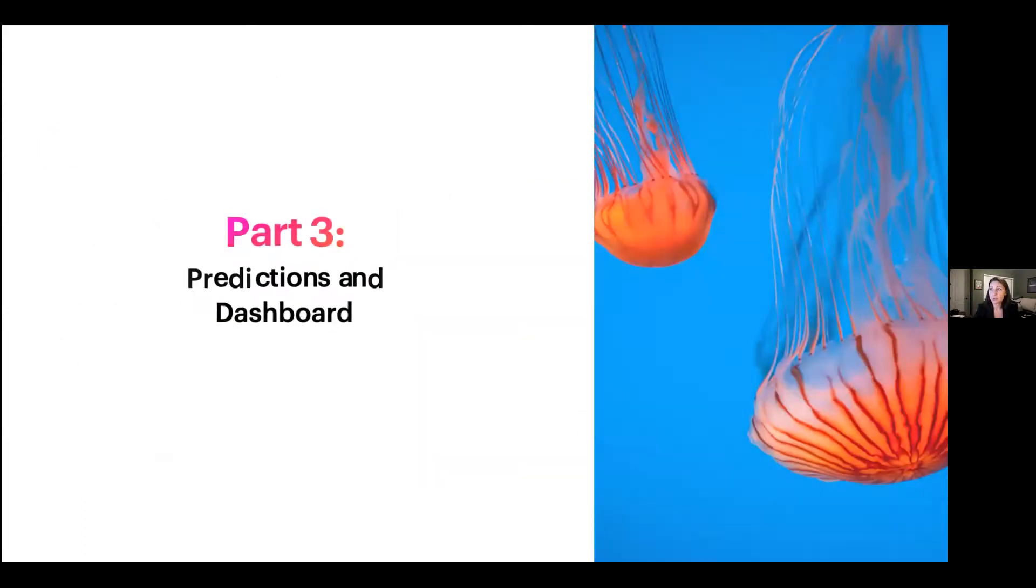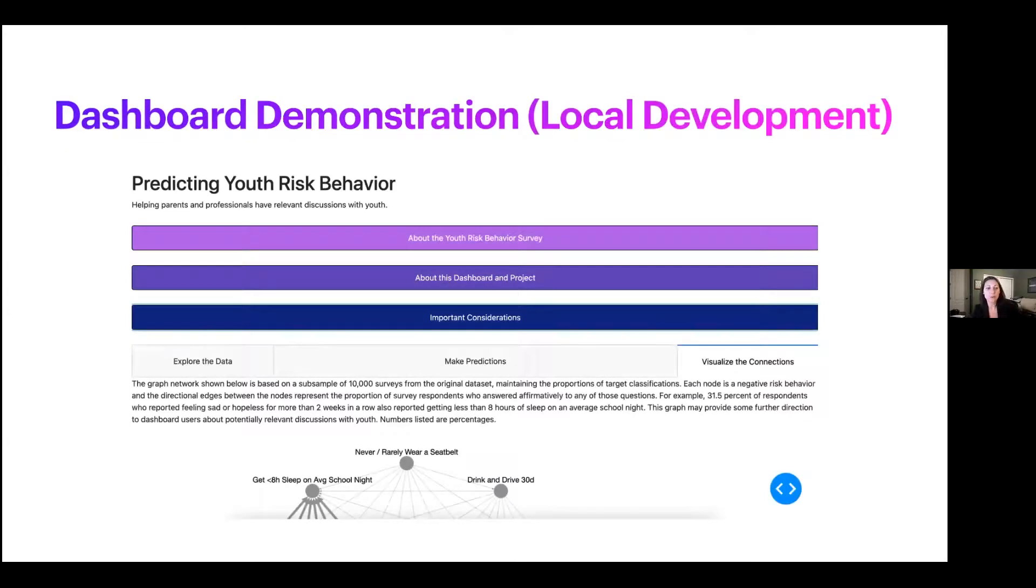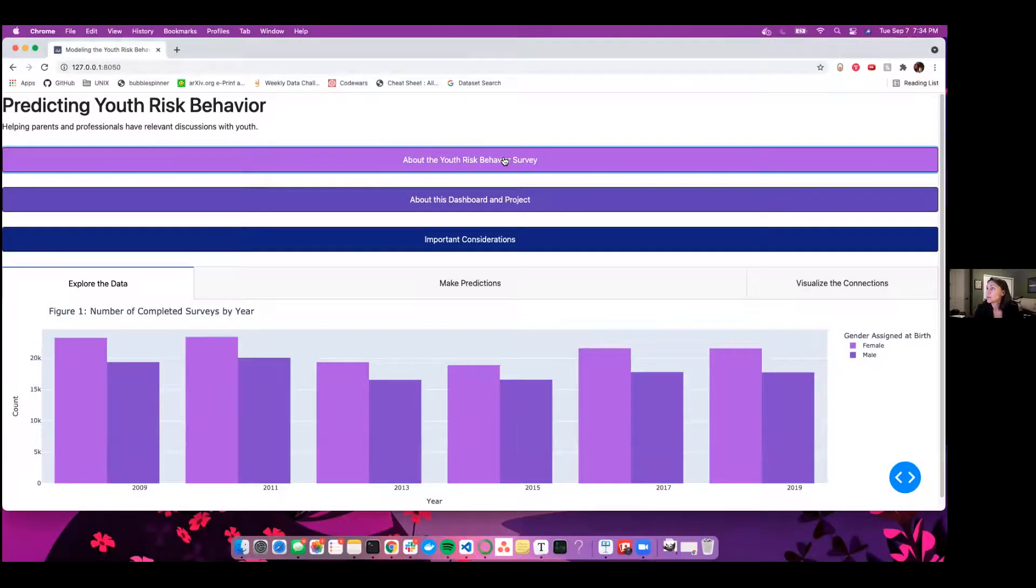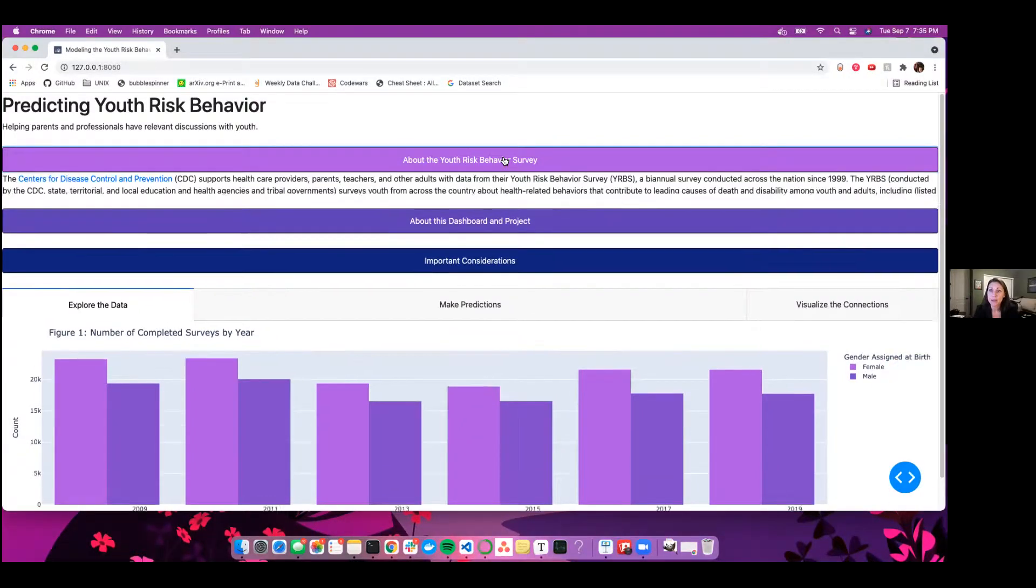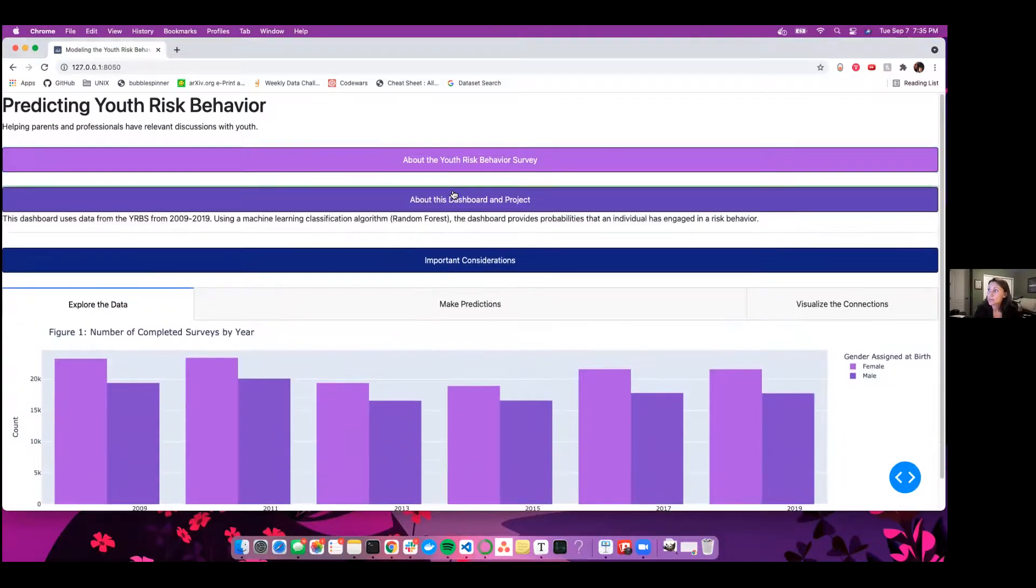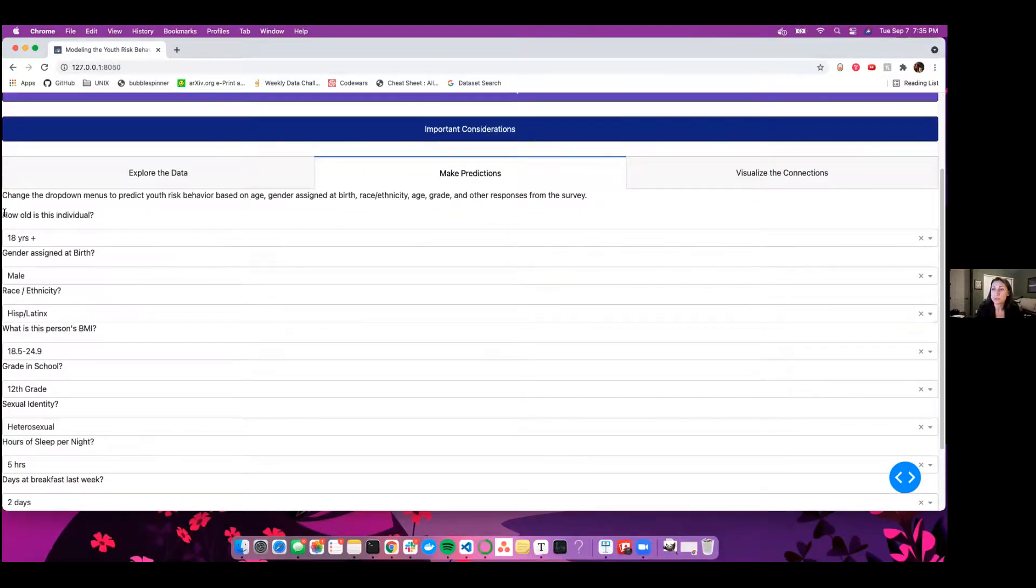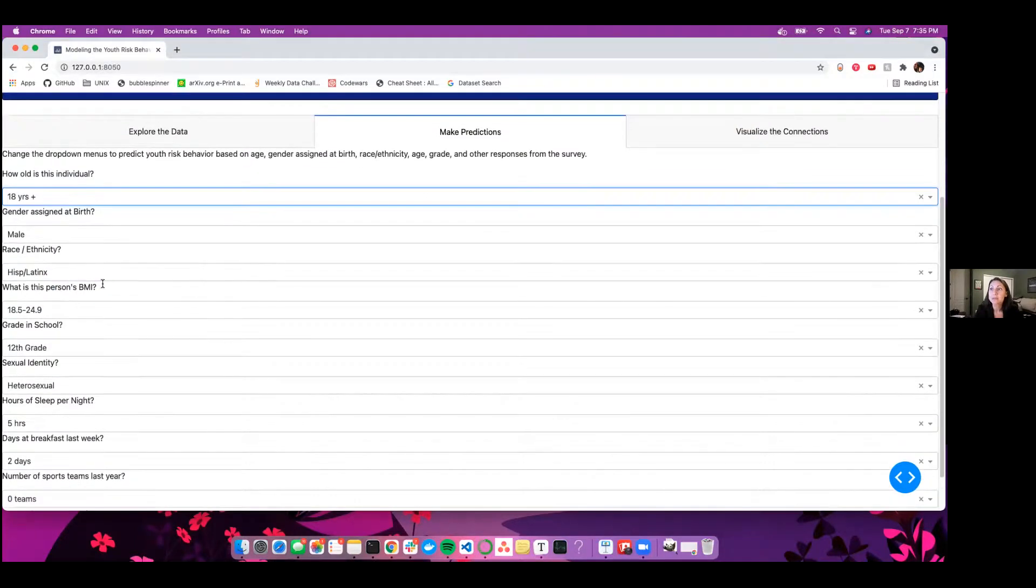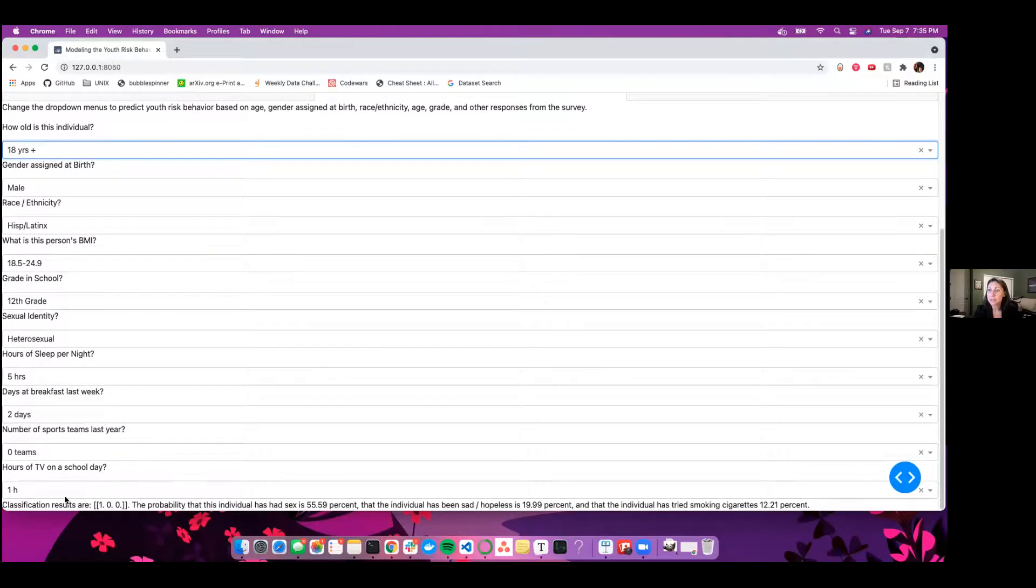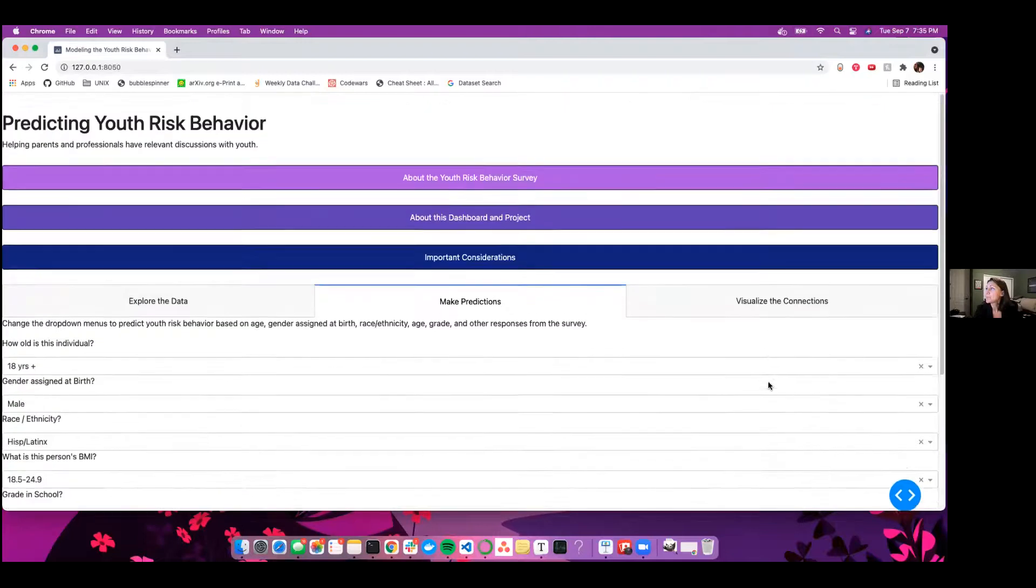Now we will move over to the dashboard and take a look at a couple of predictions. It is still in local development, but this is just a snapshot of it. Here you can see users of the dashboard could take a look at a little bit more about the Youth Risk Behavior Survey here up at the top, more about the dashboard and the project and some other important considerations. They could also explore the data much in the same way we just did on the slides. They can make predictions using these drop downs. So you can see the questions here, how old is this individual, choosing the correct age, choosing the gender assigned at birth, their race and ethnicity, their BMI, and a number of other features that were included in the model for prediction. And the classification results are listed at the bottom. So for this specific individual, the probability that they've had sex is 55.59%, that they've been sad or hopeless is close to 20%, and that they've tried smoking is around 12%.